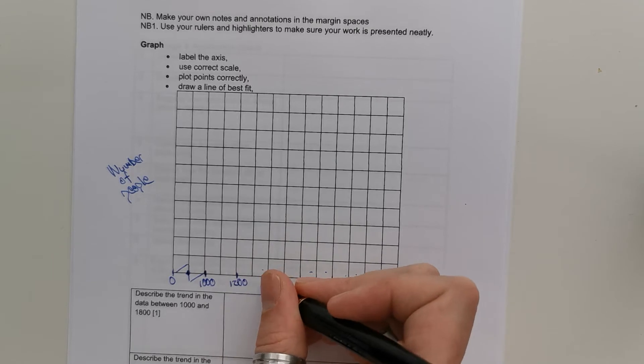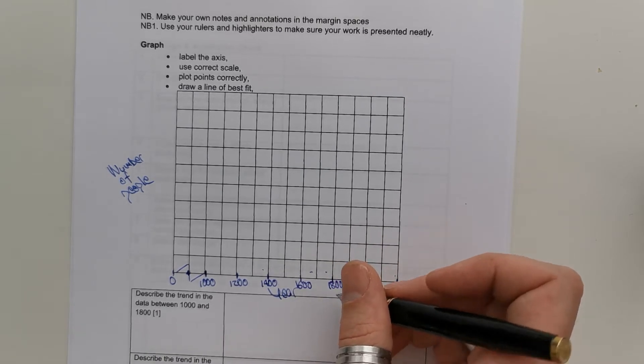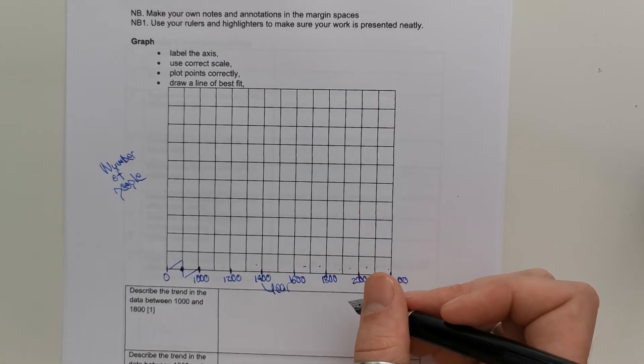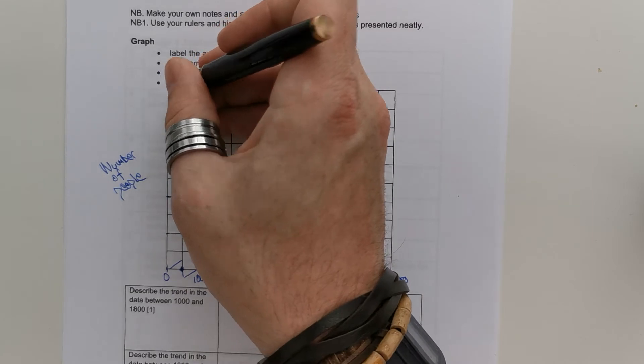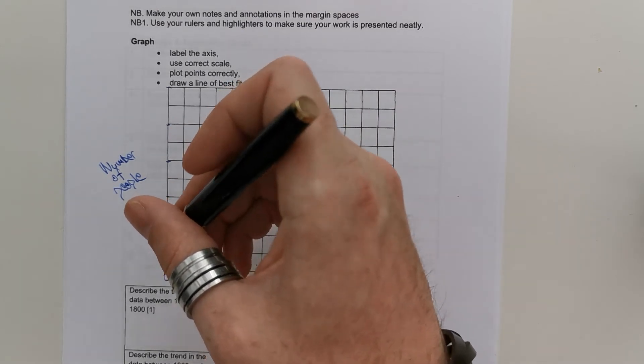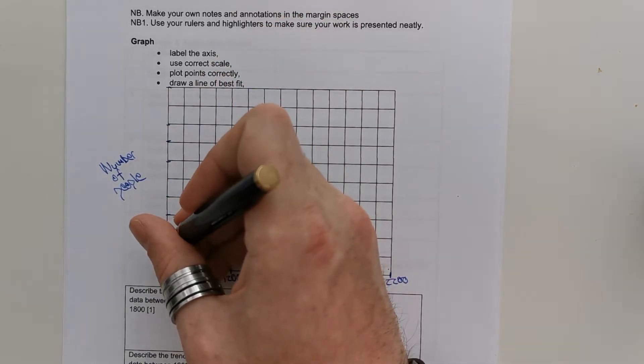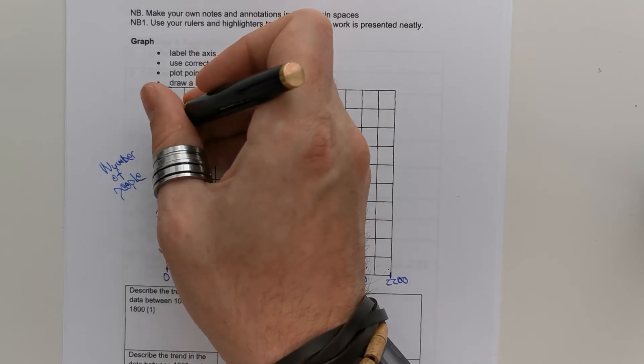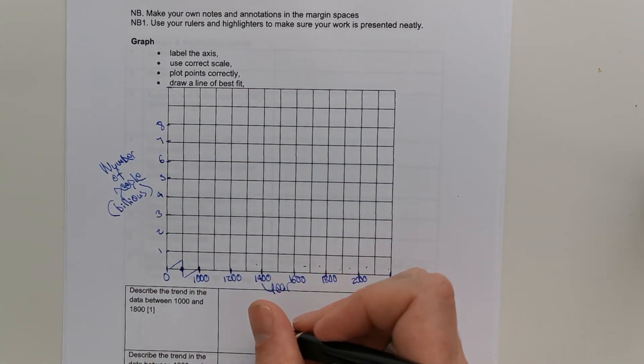And we're just going to put a little, like that, so we can jump off our axes. Then we've got 1,000, 1,200, 1,400, 1,600, 1,800, 2,000, 2,200, like so. Then, up the side, we go to 6. Well, maybe even 7. We'll go 1, 2, 3, 4, 5, 6, 7. So, it's the number of people in billions. Now, we've got decimal points. It's not going to be the easiest thing to plot, but we'll plot it the best we can.